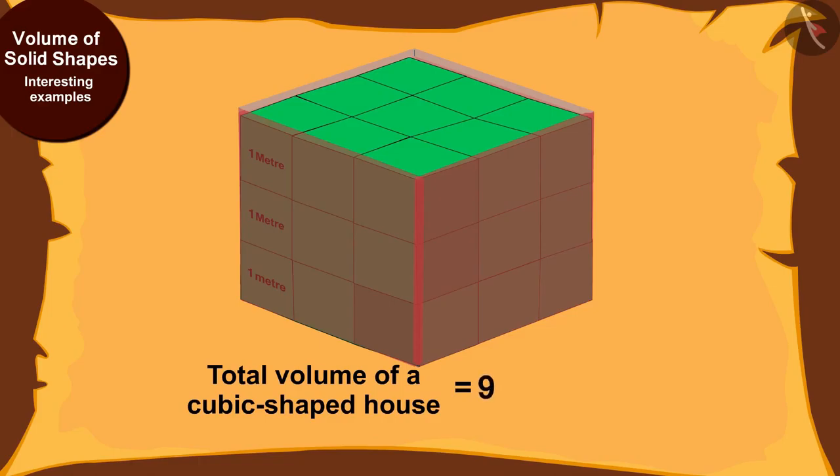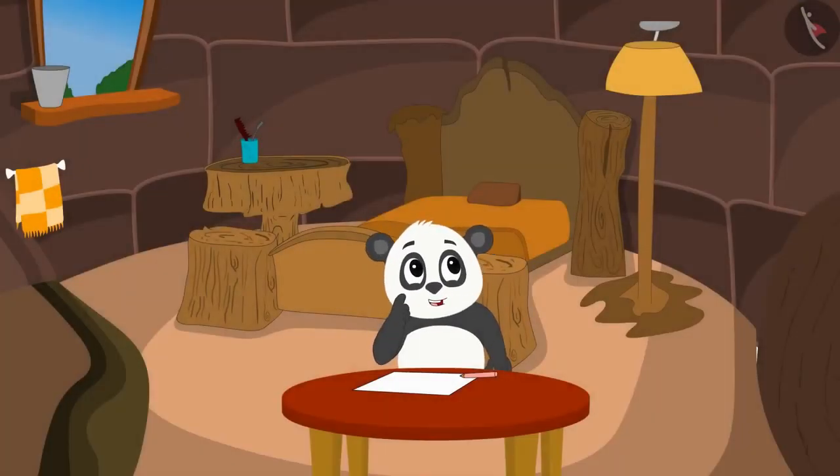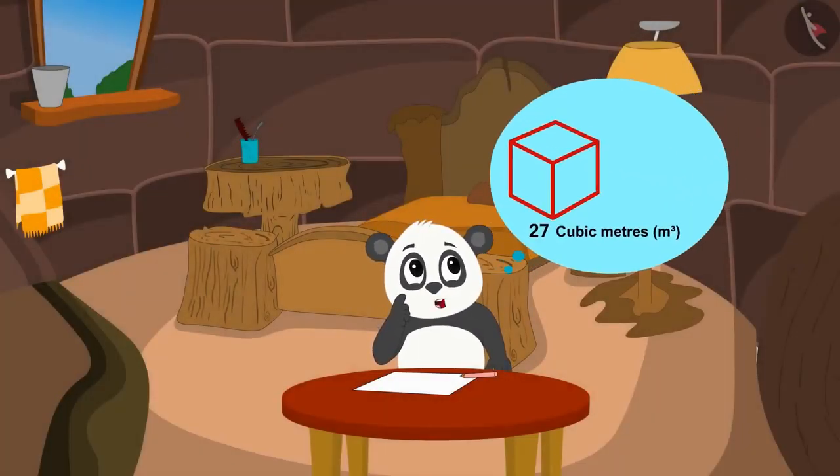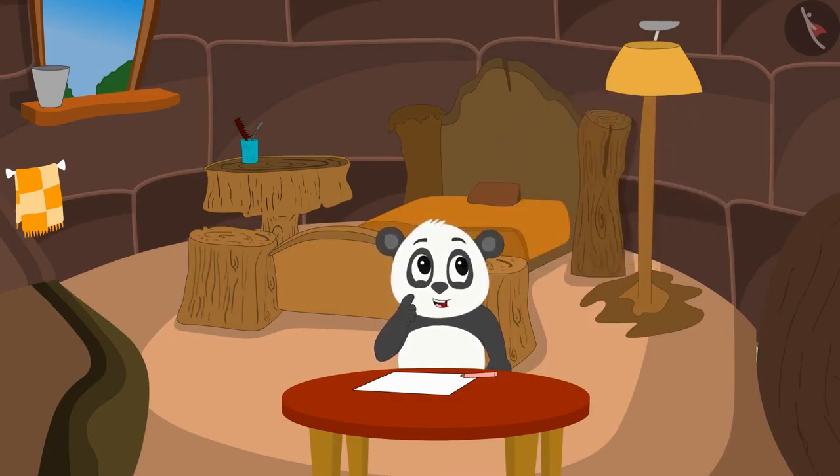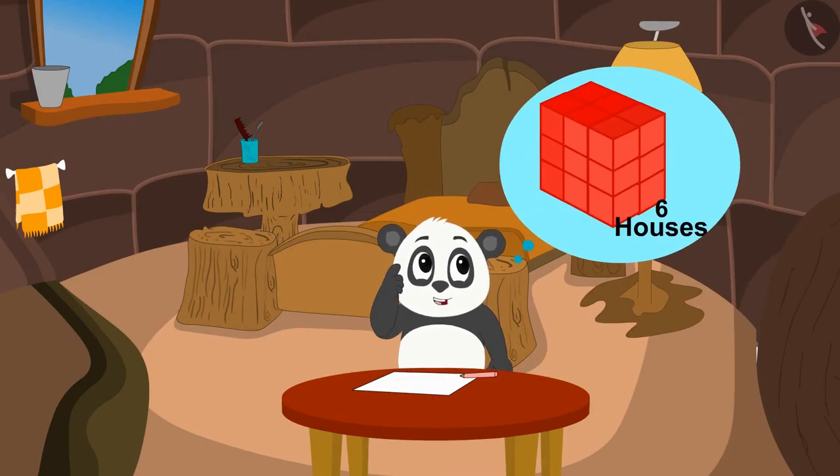This means the total volume of a cubic-shaped house will be nine times three, that is equal to twenty-seven cubic meters. If I build six houses on each floor of the building, how many cubic meters will be the total volume of the lowest floor?